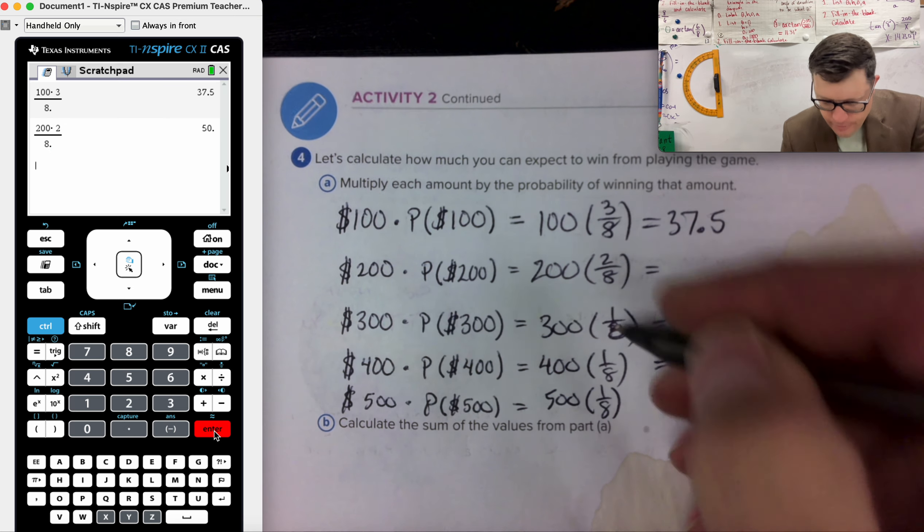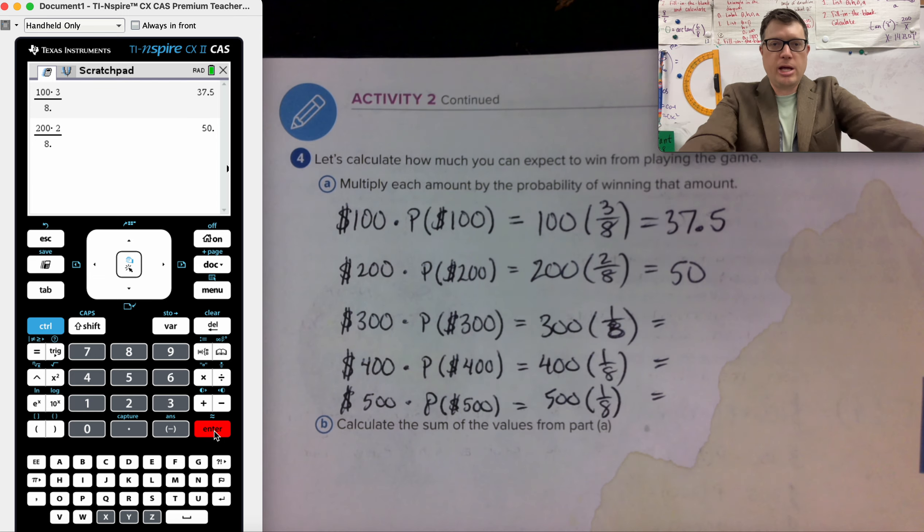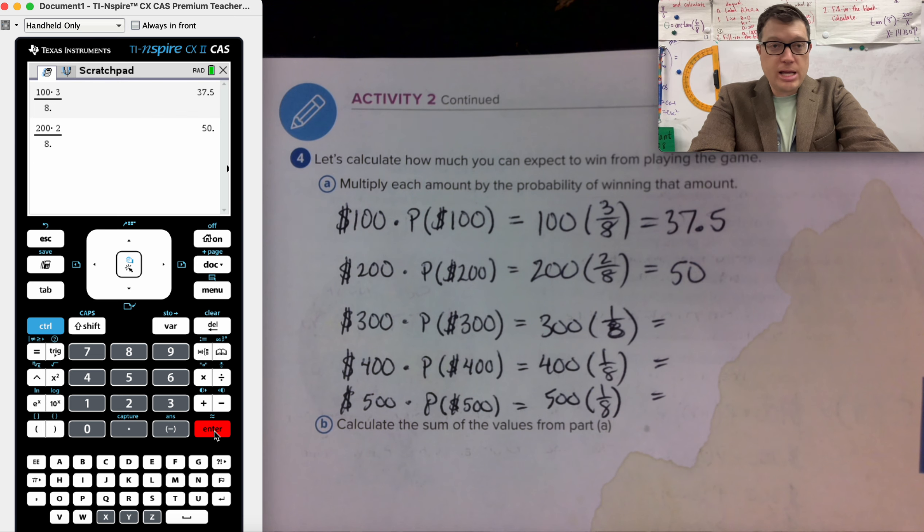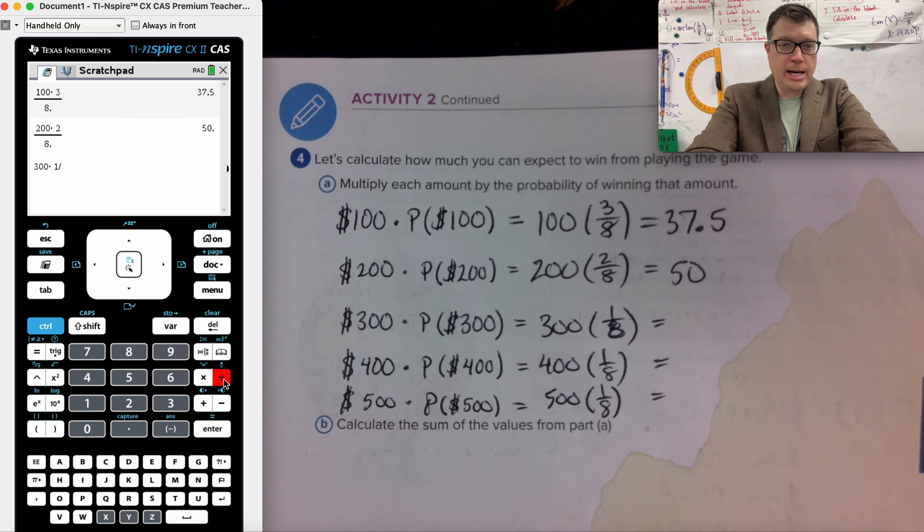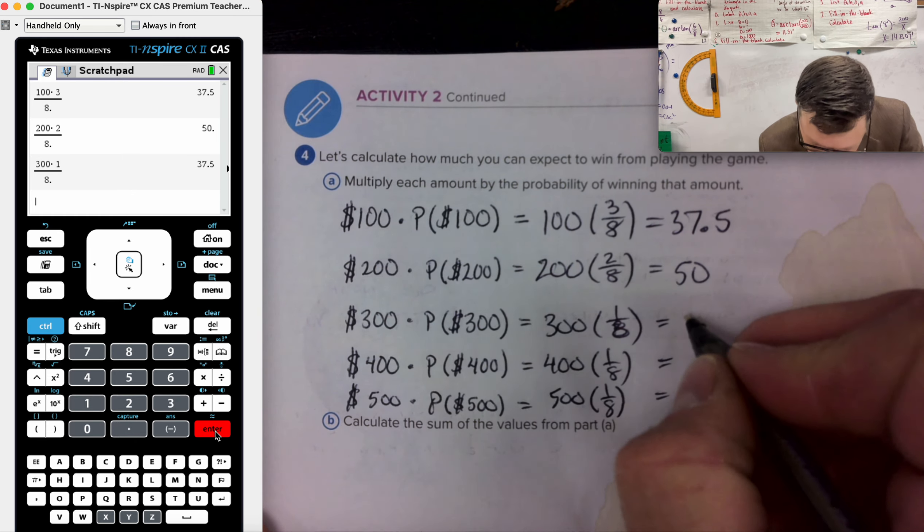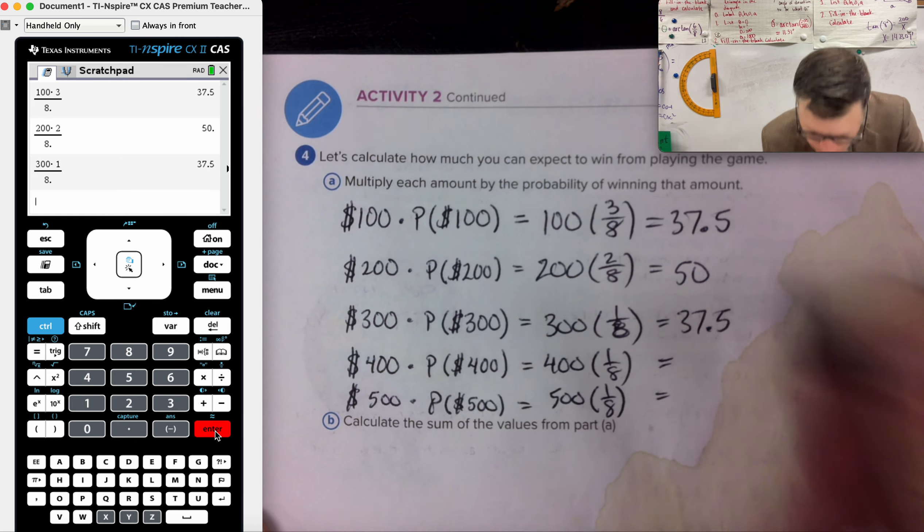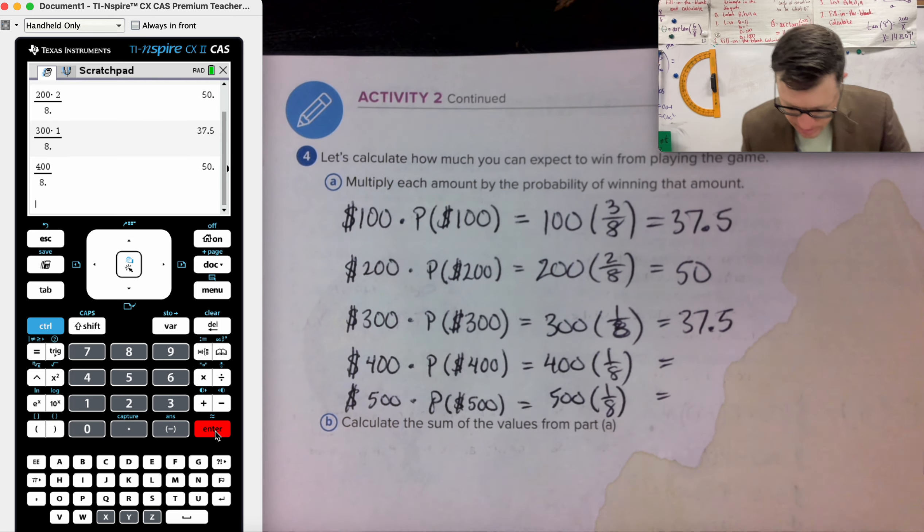200 times two divided by eight. 50 bucks. Well, 50 bucks, however, not the 50 that's going to happen. It's just the probability of winning times the amount of money that was up for grabs. 300, times one divided by eight. 37.5.